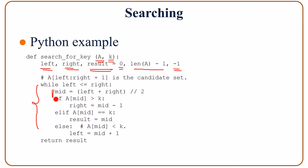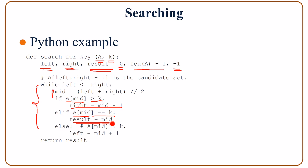Mid here is the index of the mid element. If the value of the mid element a[mid] is greater than k, then in the next iteration we should search for k in the first half of the array. So right, which is the index of the last element in the new array, is set to mid minus 1. If the element at mid is equal to k, then the value we searched for is found. We store the index of the mid element into the result variable.